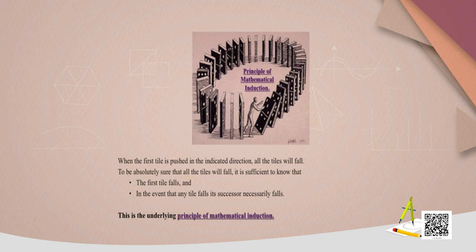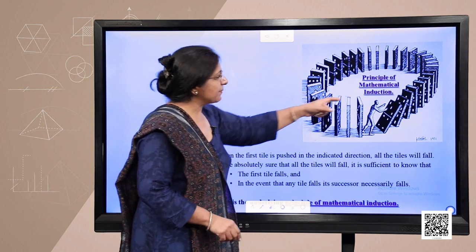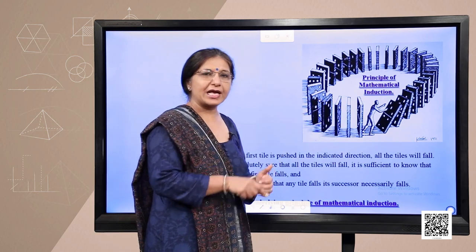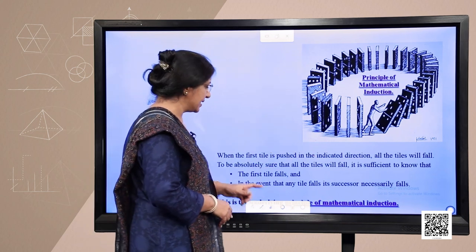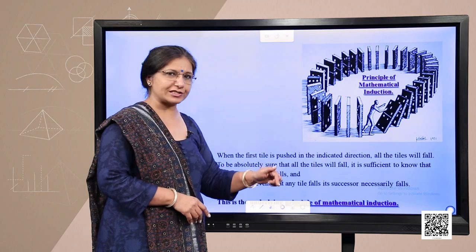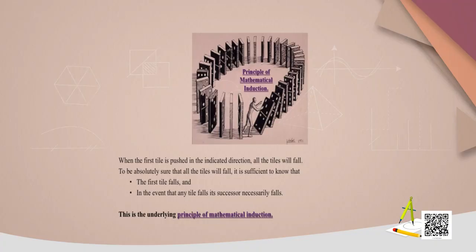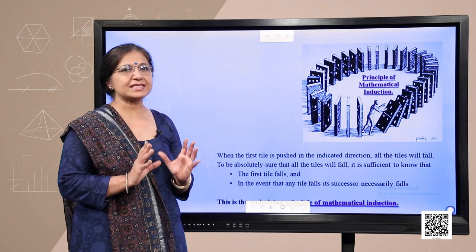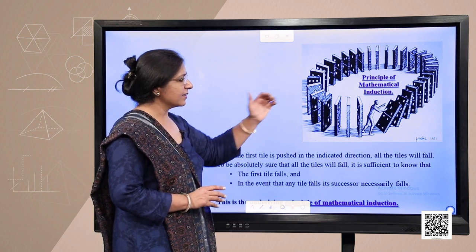To be absolutely sure that tiles will fall, it is sufficient to know two things. First, we need to ensure that when we push the first tile, it should fall — if the first tile itself has not fallen, how will the other tiles fall? So we must ensure the first tile falls. The second step: in the event that any tile falls — if we pick any random tile and it falls — we need to check whether the subsequent or next tile also falls. These are the two major steps to be taken care of while studying mathematical induction.